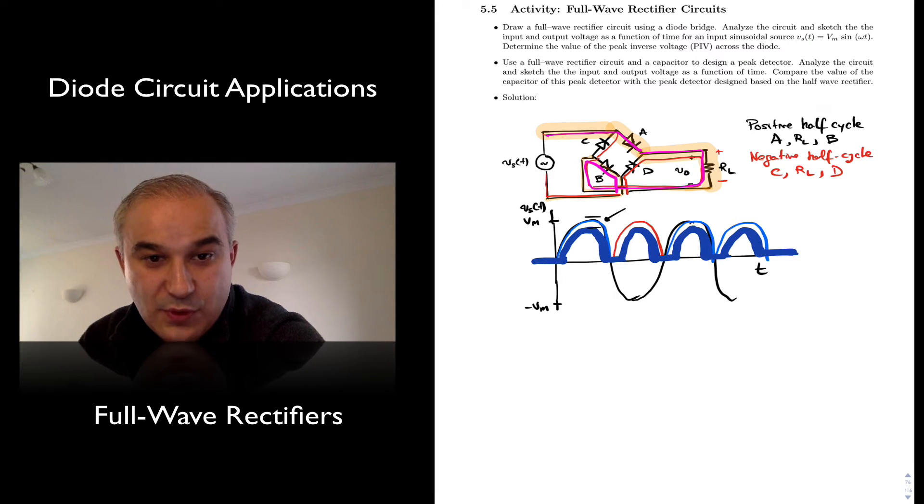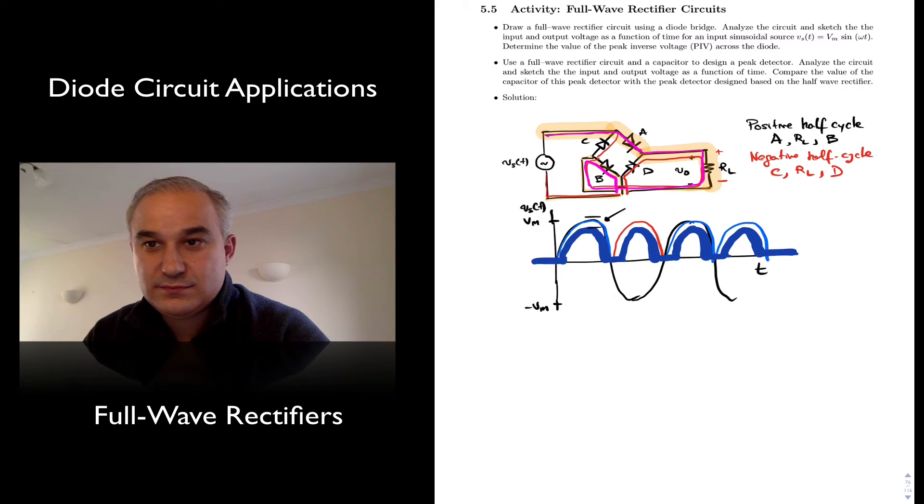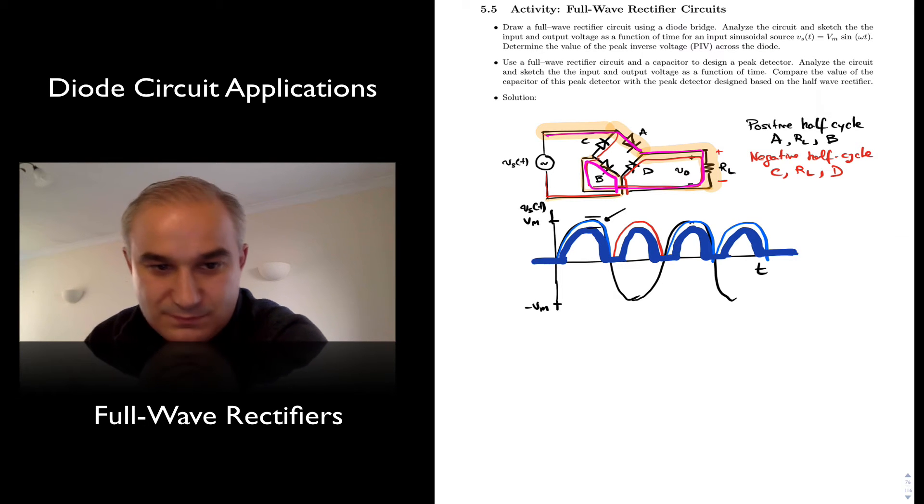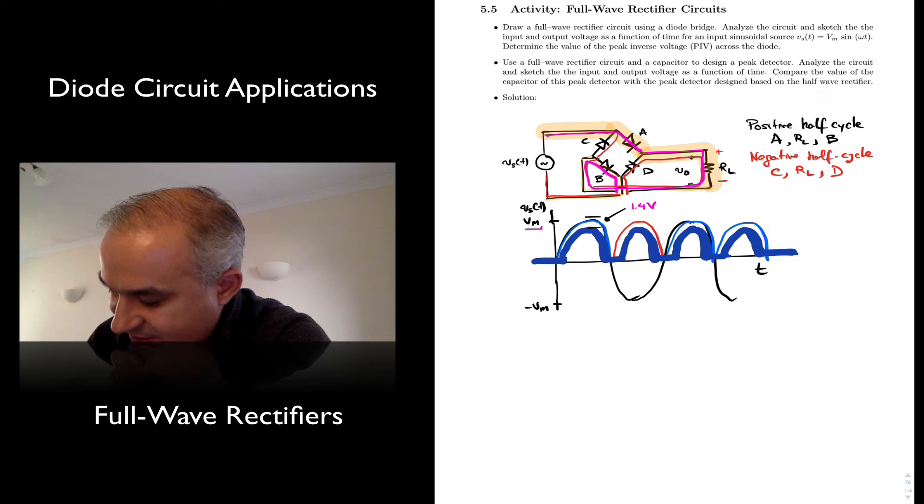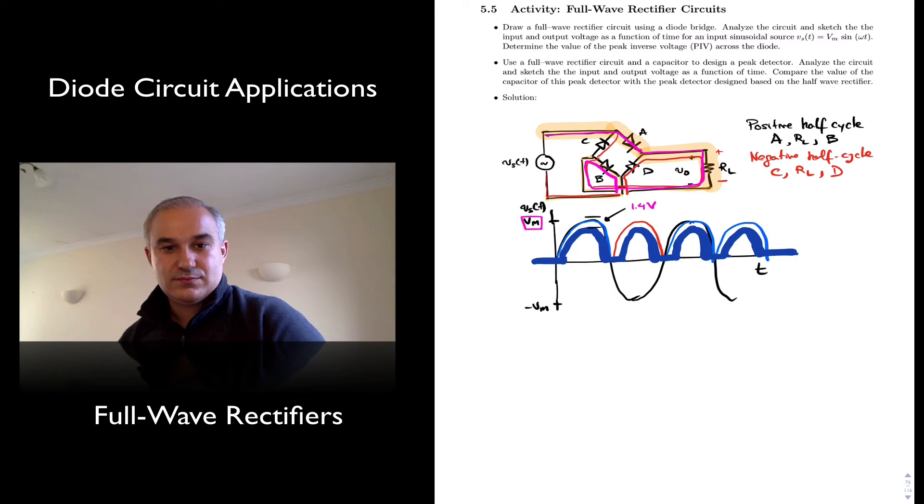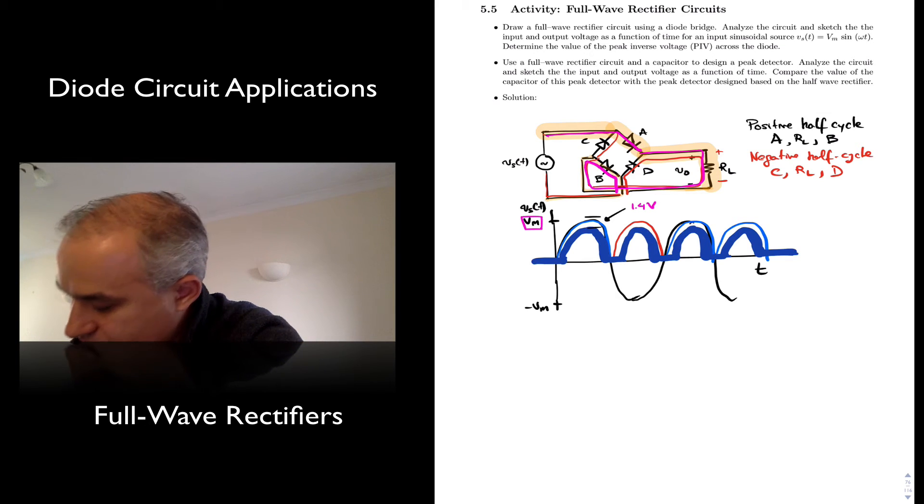So this, in the output, what we have is 1.4 volts less than Vm. Okay? The actual diodes. So we have Vm minus 1.4 volts in full wave rectification.